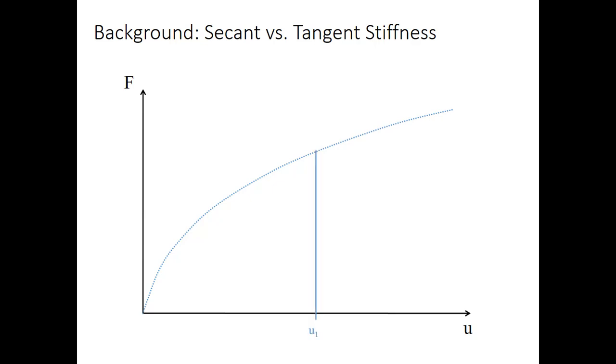Imagine that we have a displacement U1 corresponds to a force P. Now, we can talk about secant stiffness, which is just the line connecting the origin to the point where P and U intersect on our load curve. In other words, K is equal to delta P over delta U.